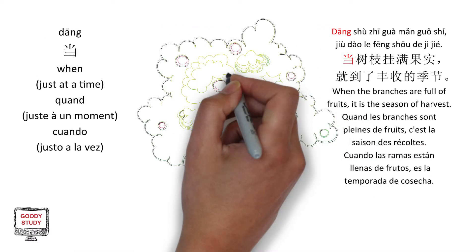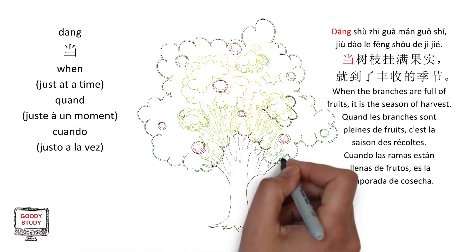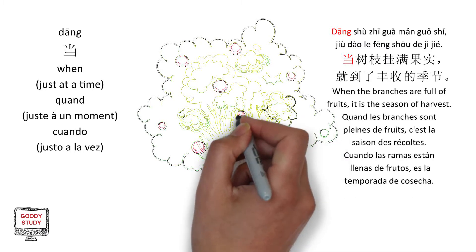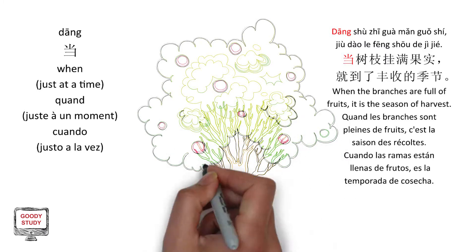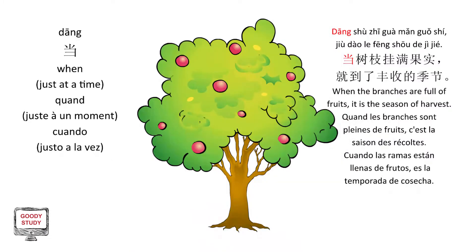当。当树枝挂满果时，就到了丰收的季节。(When. When the branches are full of fruit, it is the harvest season.)